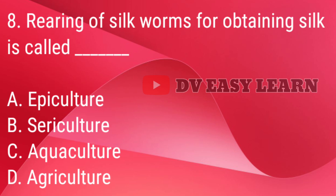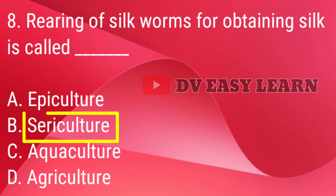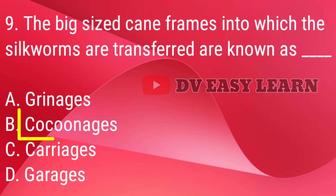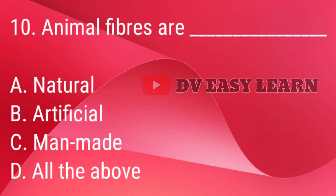Q8. Rearing of silkworms for obtaining silk is called — sericulture. Q9. The big sized cane frames into which the silkworms are transferred are known as — correct answer: Chandrikas.